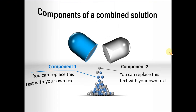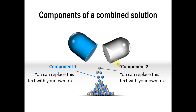Let me show you another example template. In this case, the everyday object is capsules with things inside them. There are two types of ingredients or components that provide a solution, because a capsule solves a problem. Here we can talk about the components of a combined solution where component 1 is represented by blue and component 2 by grey — explaining how two things when combined can provide a solution.